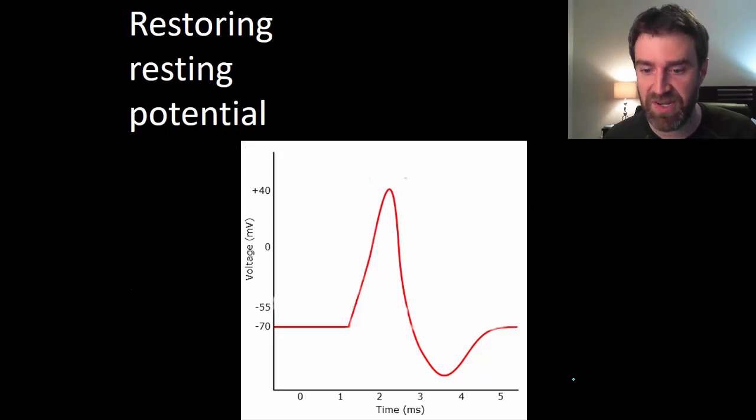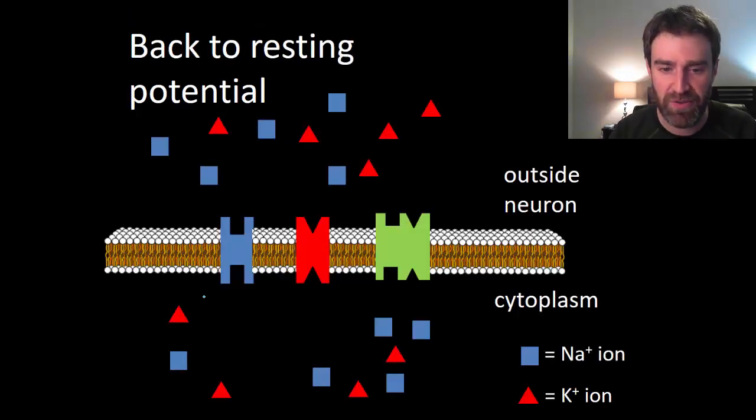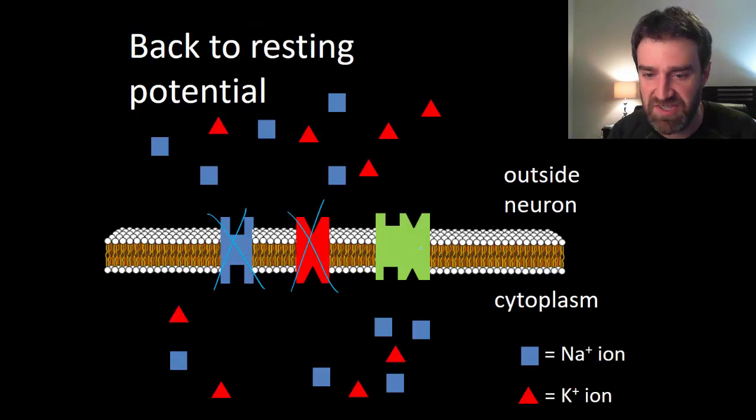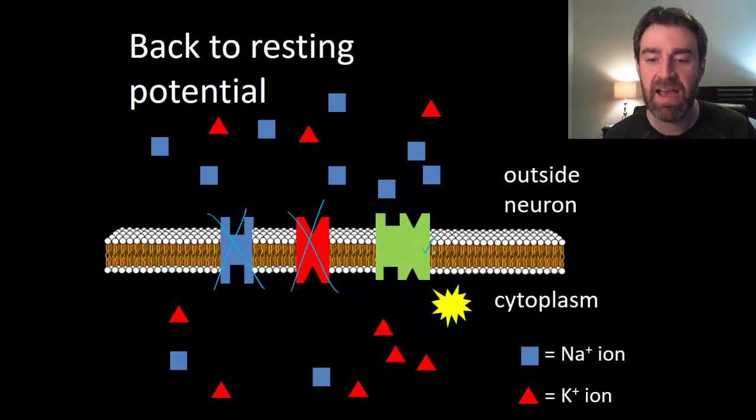So we've just got one more step. We just need to return to resting conditions. Both ions have had a chance to move, so both channels at this point are going to be closed. And that just leaves the sodium-potassium pump open to do active transport—push my sodiums back out, push my potassiums back in—and that is going to return us back to resting conditions. Remember that that requires ATP energy. This is the only protein in the whole process that's doing active transport.